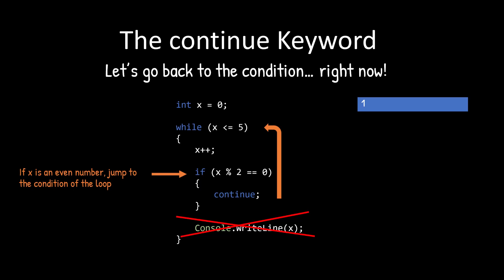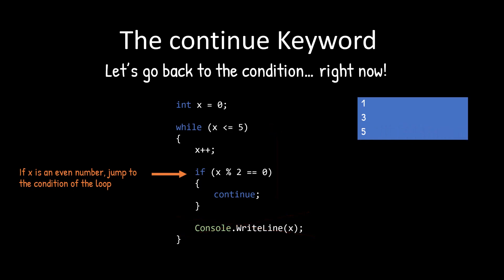So as long as the value continues to be odd, it will continue printing. So when it becomes three, it will print. But when it's four, it's going to skip. And when it's five, it's going to print. So every time the continue keyword is hit, it's going to skip to the condition.